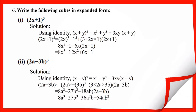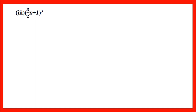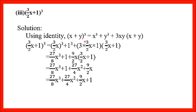Part 3: (3/2 x + 1)³. Identity number 6 will be used: (x + y)³ = x³ + y³ + 3xy(x + y). Now compare: x = 3/2 x and y = 1. Wherever there is x in the identity, write 3/2 x; wherever there is y, write 1.